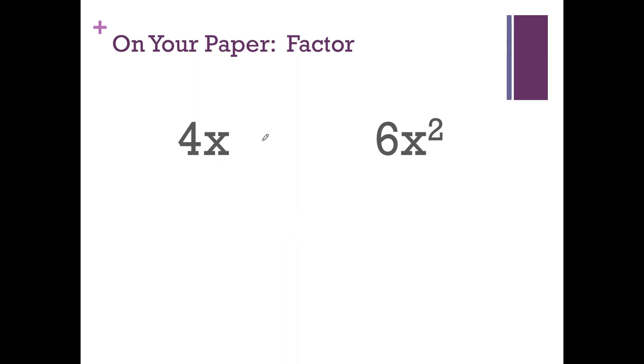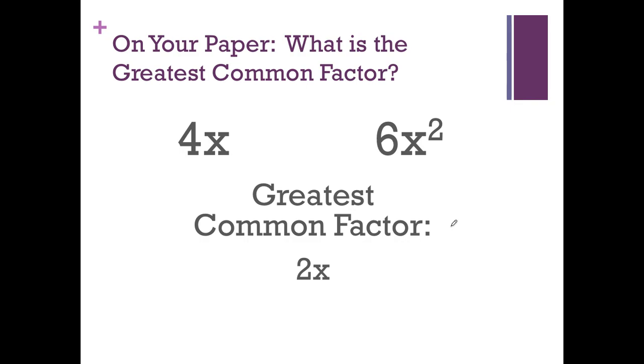So now we're going to factor 4x and 6x squared. So I know that 4x, I can write that as 2 times 2 times x. For 6x squared, I know that's going to be 3 times 2, and we have 2 of those x's, so x and x. I'm going to underline what's in common. So I notice they both share 1, 2, and they both share 1 x. So then you know the greatest common factor is going to be 2x.